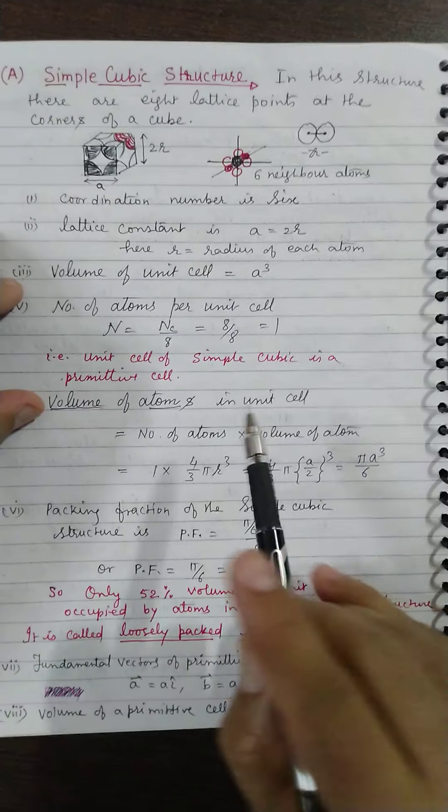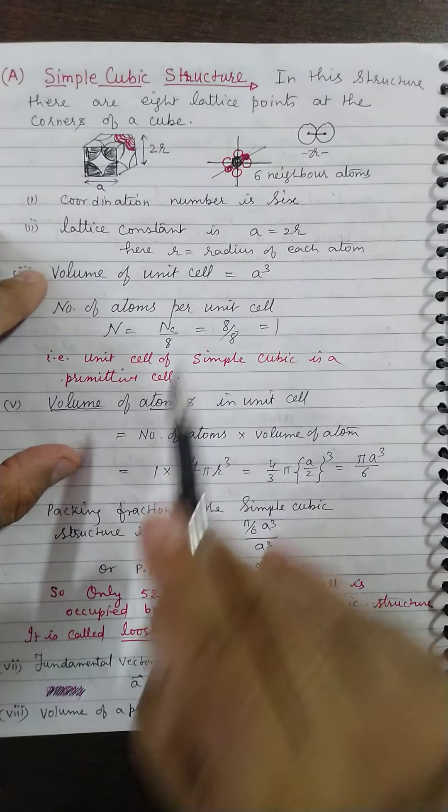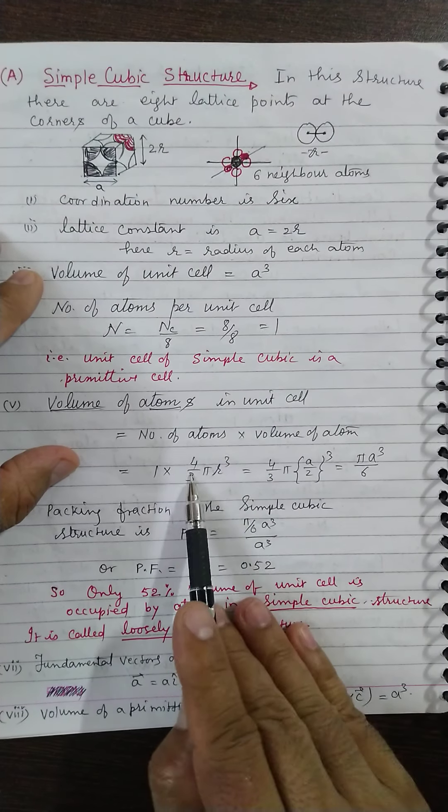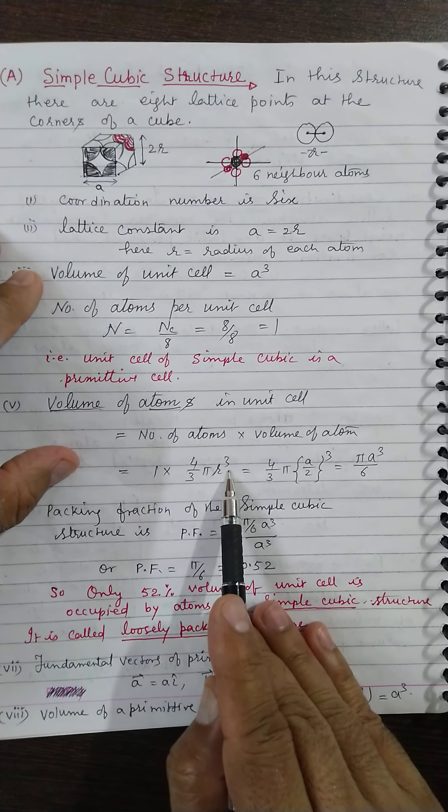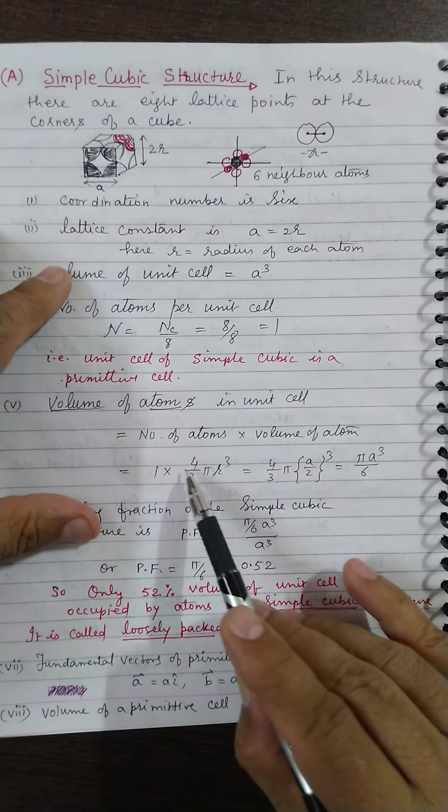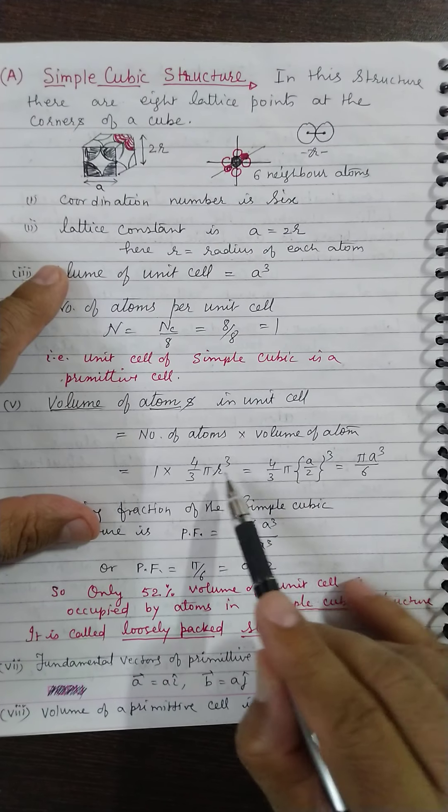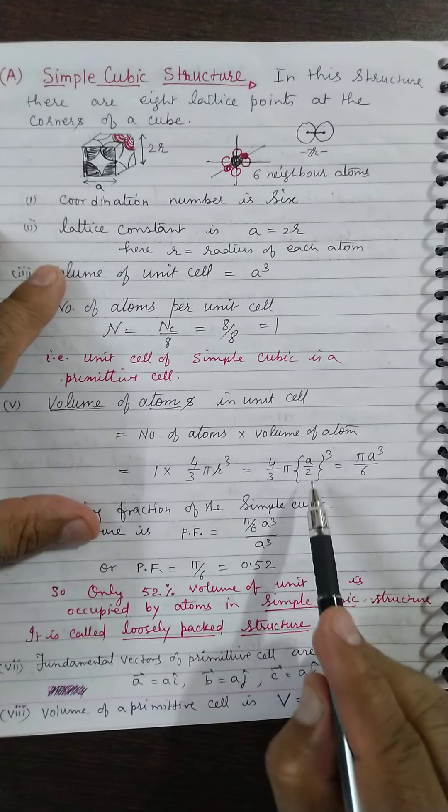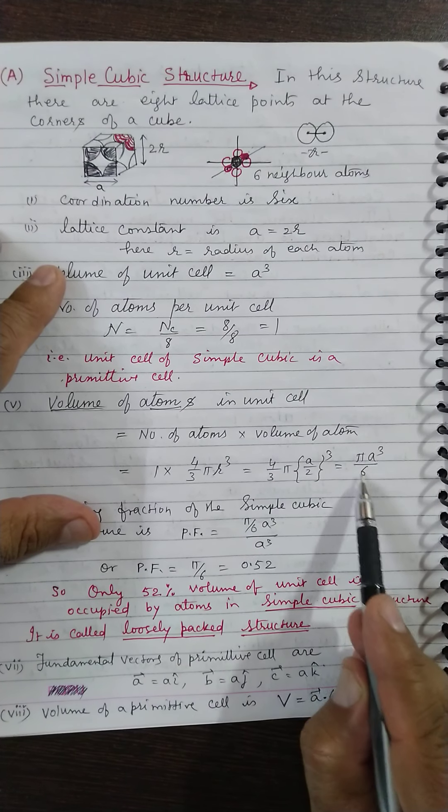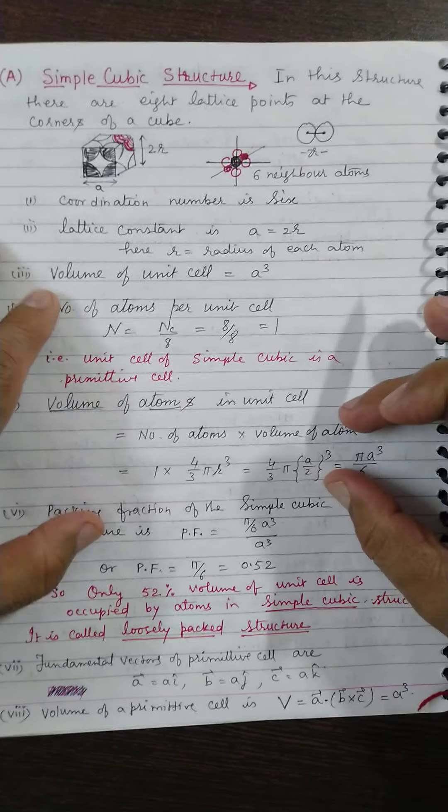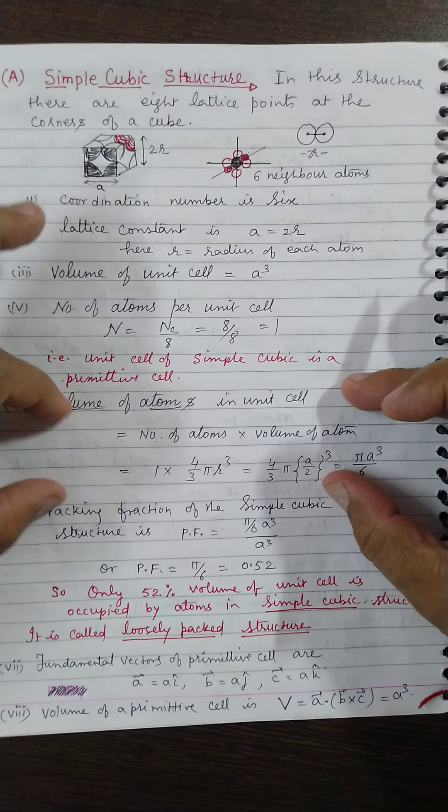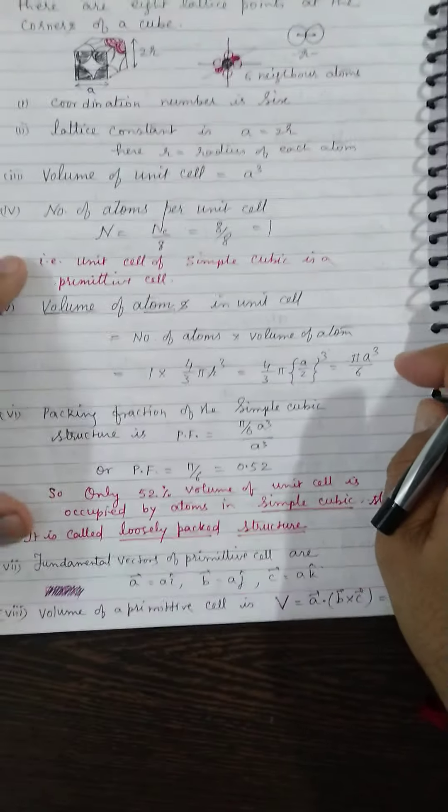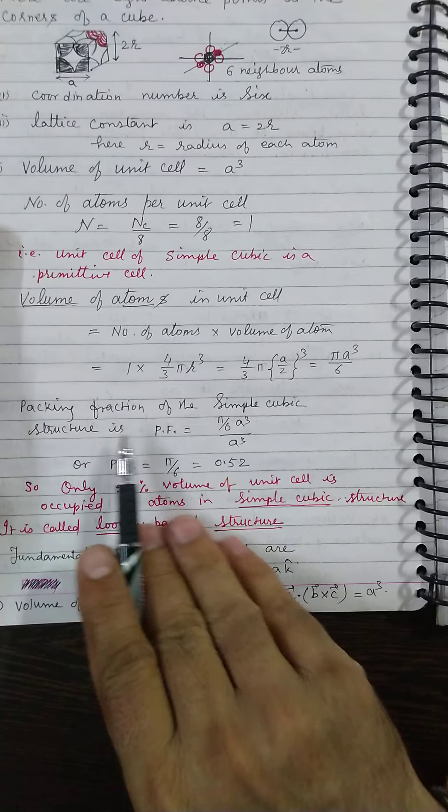Volume of atoms in unit cell can be calculated: number of atoms into volume of one atom. Number of atoms per unit cell is 1, multiplied by 4/3 π R³. R is the radius of each atom. So that will be 4/3 π (A/2)³, and I will get π/6 × A³. This is actual volume occupied by the atoms in the unit cell.